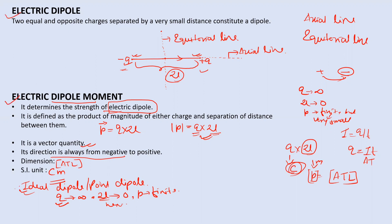That was all about electric dipole, electric dipole moment, and ideal dipole. In the next video we will calculate the electric field intensity due to a dipole at the axial position, also called the end-on position. Thank you so much, have a good day.